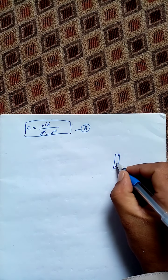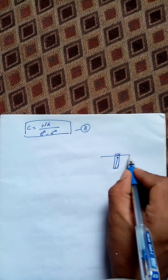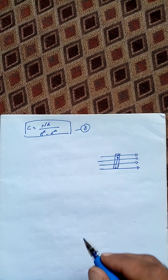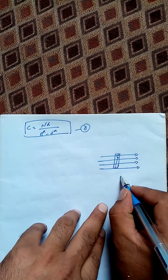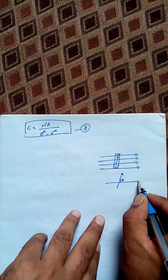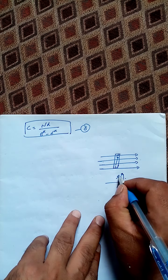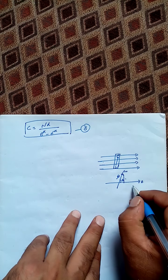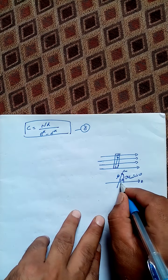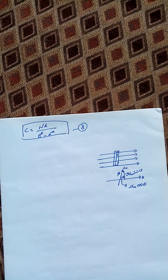Suppose we have a magnet with a North Pole and a South Pole, and the direction of the magnetic dipole moment is as shown. If we apply a magnetic field to this bar magnet, the magnetic dipole moment makes an angle θ with the magnetic field. There are two components: μM sine θ, perpendicular to the field, and μM cosine θ, in the direction of the field.